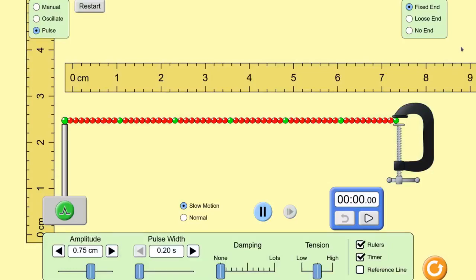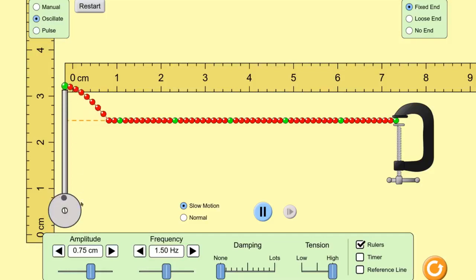Okay, let's move on to the standing wave part of the simulation. We don't need the timer anymore. We make sure that we're back at the fixed end. We set the tension back to high. And we change the pulse driver to an oscillating driver.